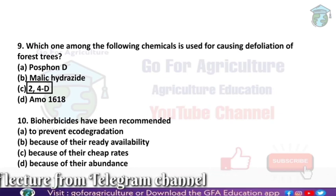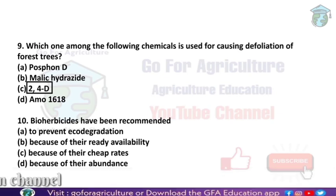Next: bio-herbicides have been recommended. Why do we use bio-herbicides? The main reason is herbicidal action, but the other main reason is to save the environment — specifically to prevent eco-degradation. So bio-herbicides have been recommended to prevent eco-degradation.